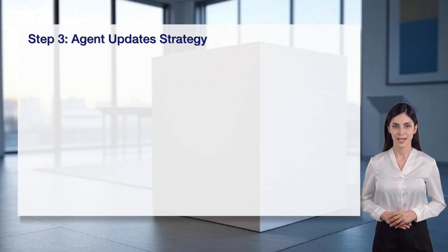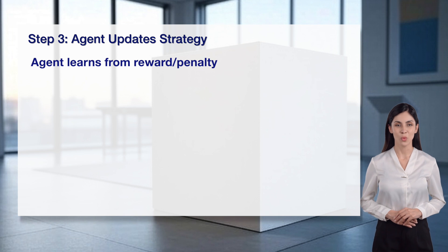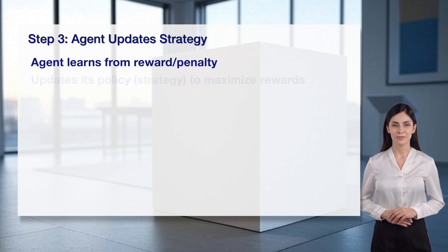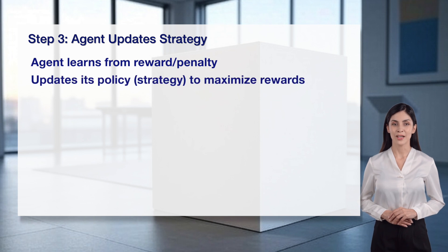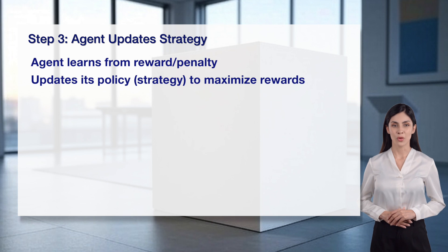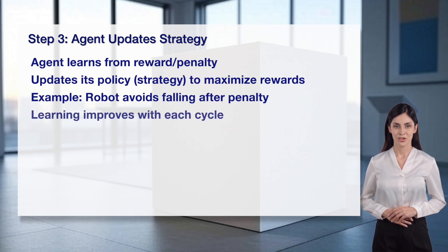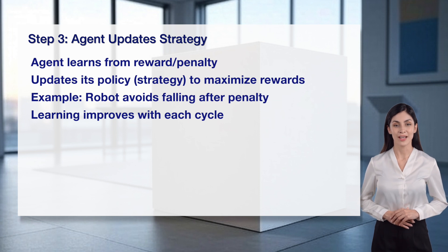Step 3 is where the agent updates its strategy. The agent learns from the reward or penalty it received, understanding what worked and what didn't. It updates its policy — its strategy for choosing actions — to maximize future rewards. For example, a robot might avoid falling after receiving a penalty for a bad move. With each cycle, the agent's learning improves, getting better at making decisions. This iterative process is the heart of reinforcement learning.